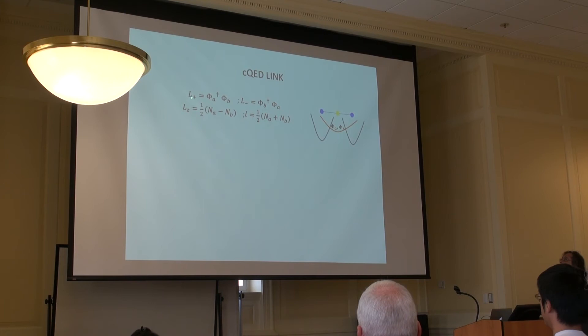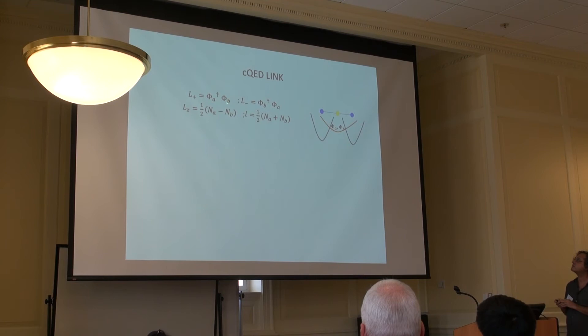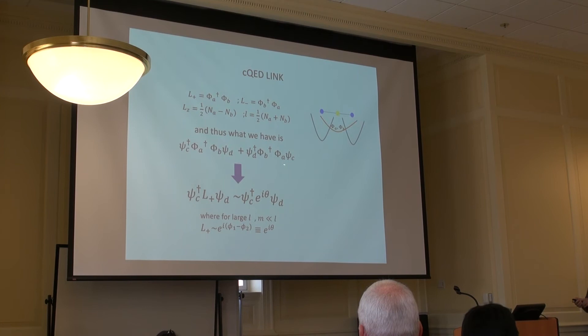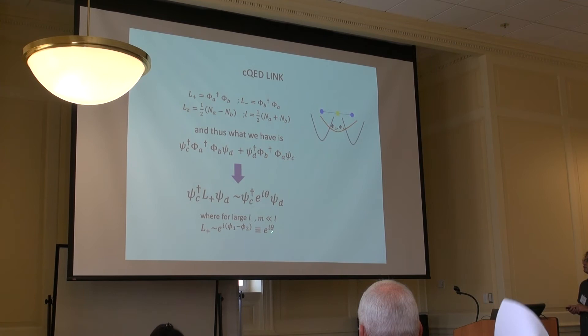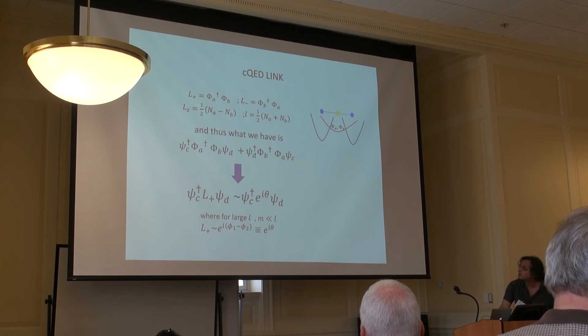We write the two scalar fields using the Schwinger algebra trick. The raising operator L+ and lowering operator L−. L_z is the difference between N_A and N_B — the number of excitations in the A level minus the number in the B level. If one substitutes this into the interaction terms, we have L+ in one term and L− in the second. Using the fact that L+ is roughly like e^{iθ} when M is much smaller than L, we get e^{iθ}. This term is exactly the interaction term — this is the Schwinger realization of a discretized electromagnetism.